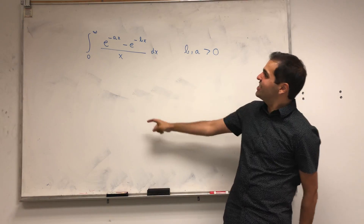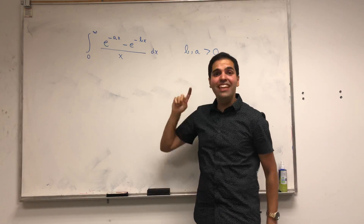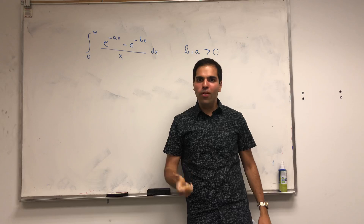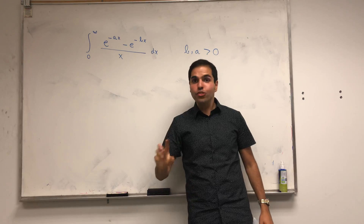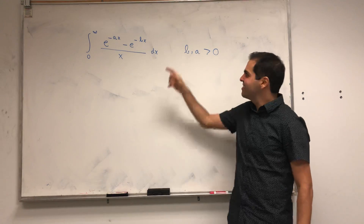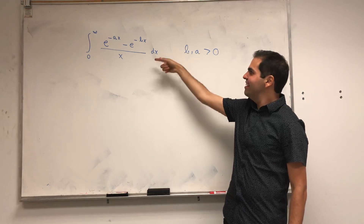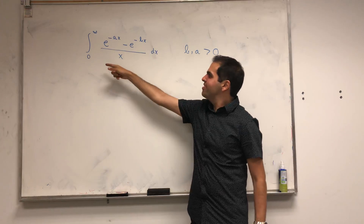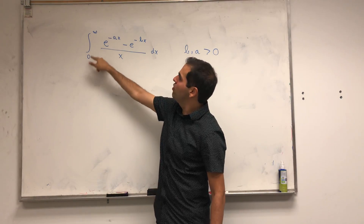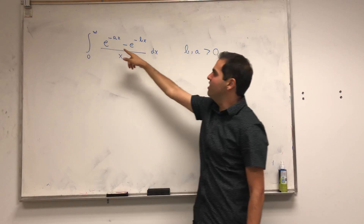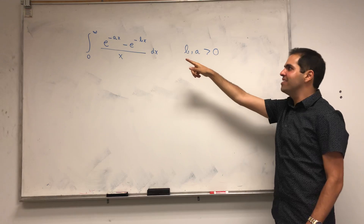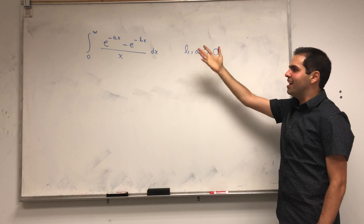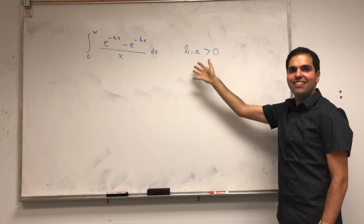All right, thanks for watching. Today I want to present yet another example of how to use multivariable calculus to calculate a single-variable integral. More precisely, consider the integral from 0 to infinity of (e^(-ax) - e^(-bx)) / x dx.